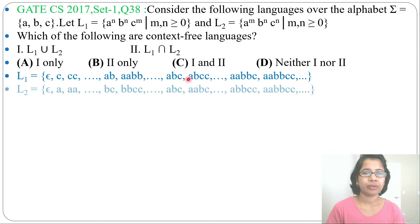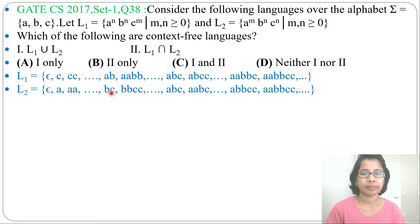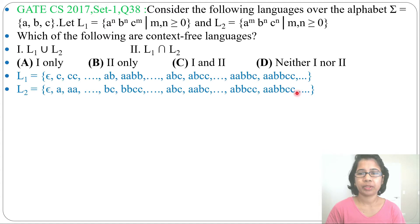Next, which strings will L2 accept? L2 will accept epsilon, A, AA, any number of A's when N = 0 — so simply Aᴹ. Then when M = 0, it can accept BC, BBCC — equal number of B's followed by equal number of C's. Then it can accept ABC, ABBC, ABBCC, AABBC, AABBCC. So L2 accepts any number of A's followed by equal number of B's followed by equal number of C's.